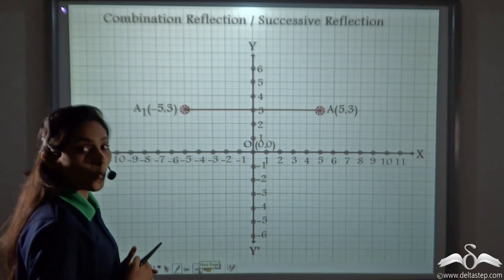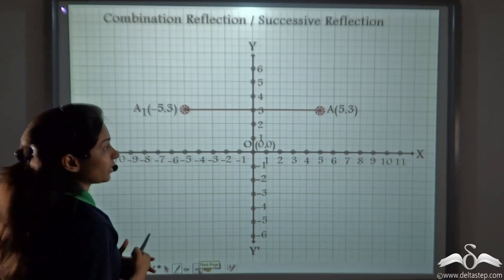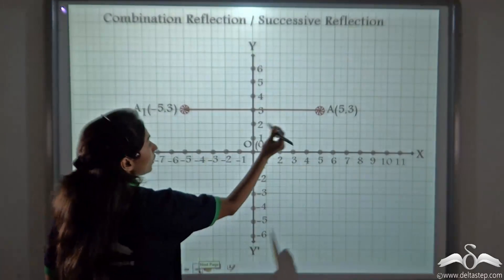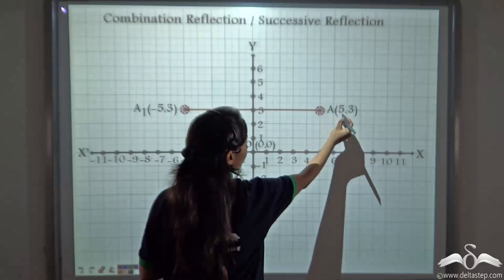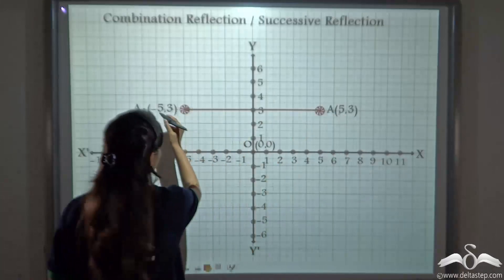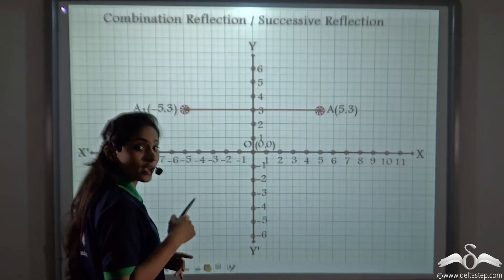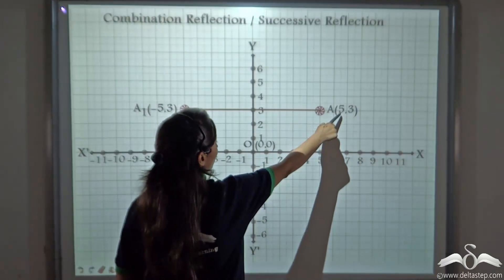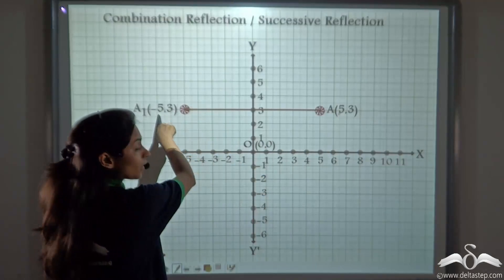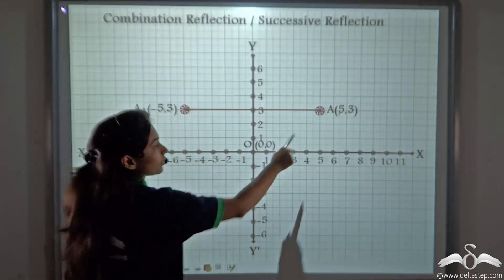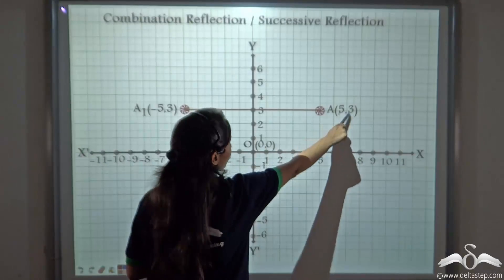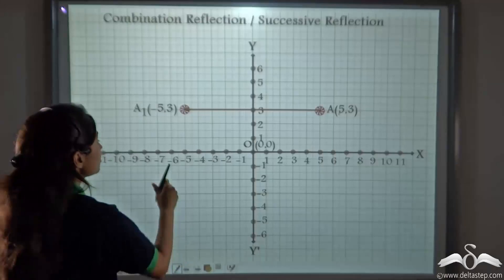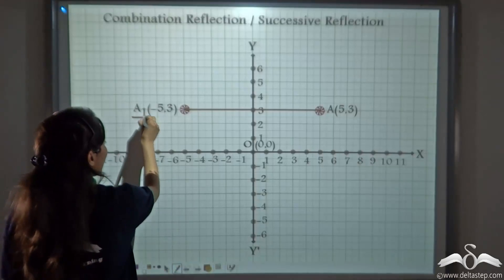Whenever we reflect a point about the y-axis, only the x coordinate changes — specifically, only the sign of the x coordinate changes. So we got 5 as minus 5, whereas the y coordinate remains the same. So we got the image as A1.